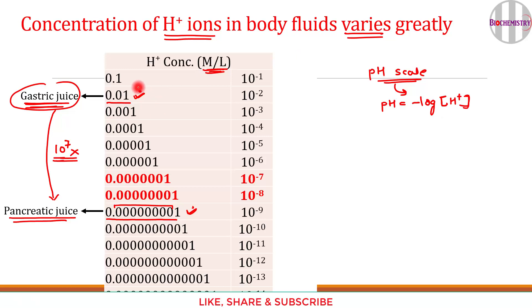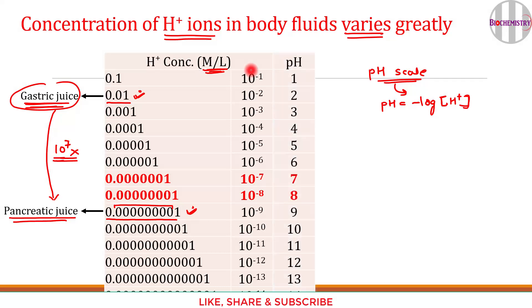We can calculate the pH for different hydrogen ion concentrations. Gastric juice has a pH of 2 and pancreatic juice has a pH of 9 — these numbers are much easier to remember and interpret.